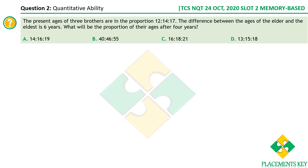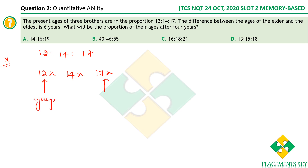Let's move to the next question. The present ages of three brothers are in the proportion 12:14:17. Let the ratio constant be x, so their ages are 12x, 14x, and 17x. The one with 12x is the youngest and 17x is the eldest.